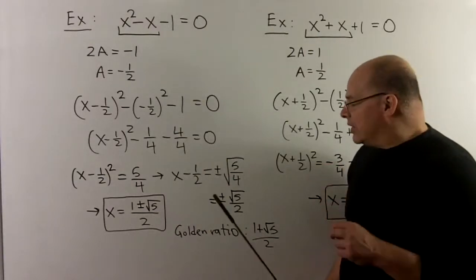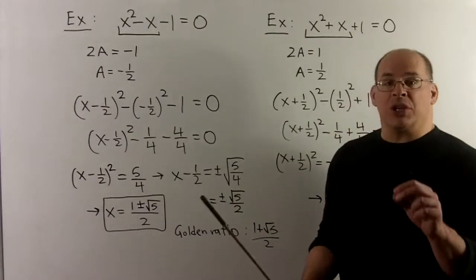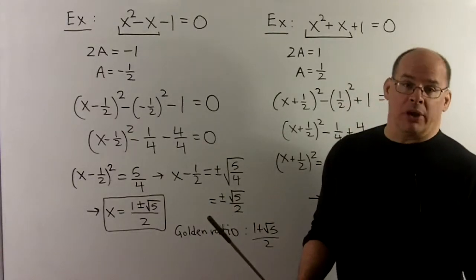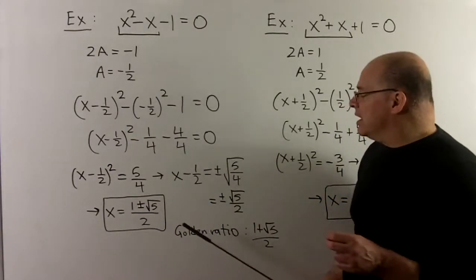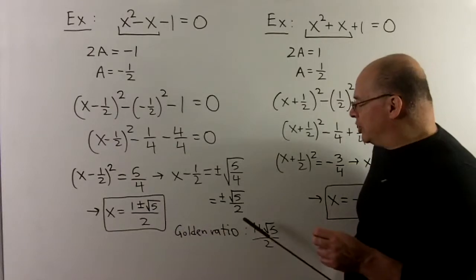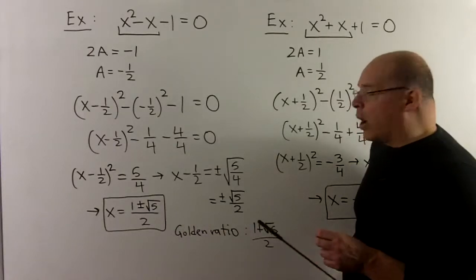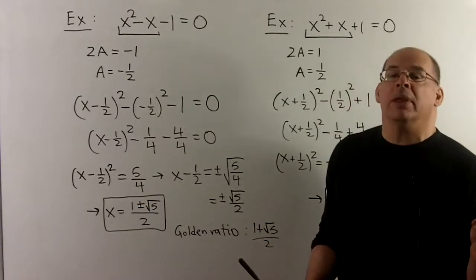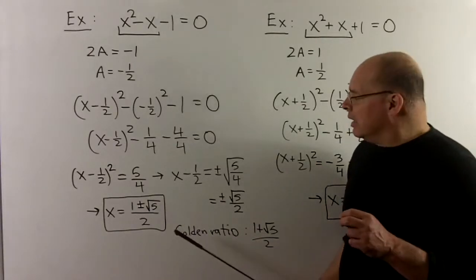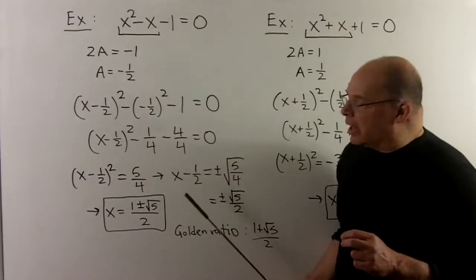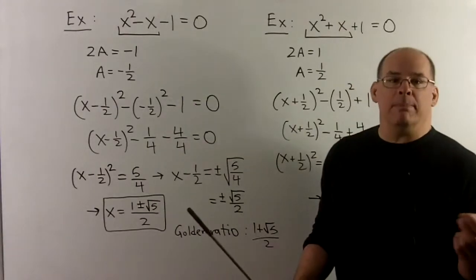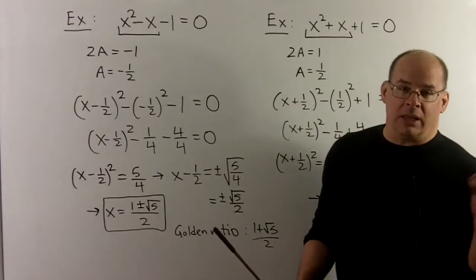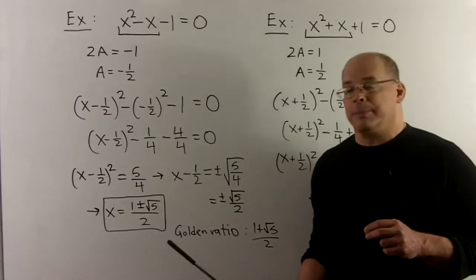One of these answers is an interesting rabbit hole all of its own — you can look it up on Wikipedia. The solution 1 plus square root of 5 over 2 is the golden ratio, which appears in many interesting places. We'll leave it to you to chase that down.